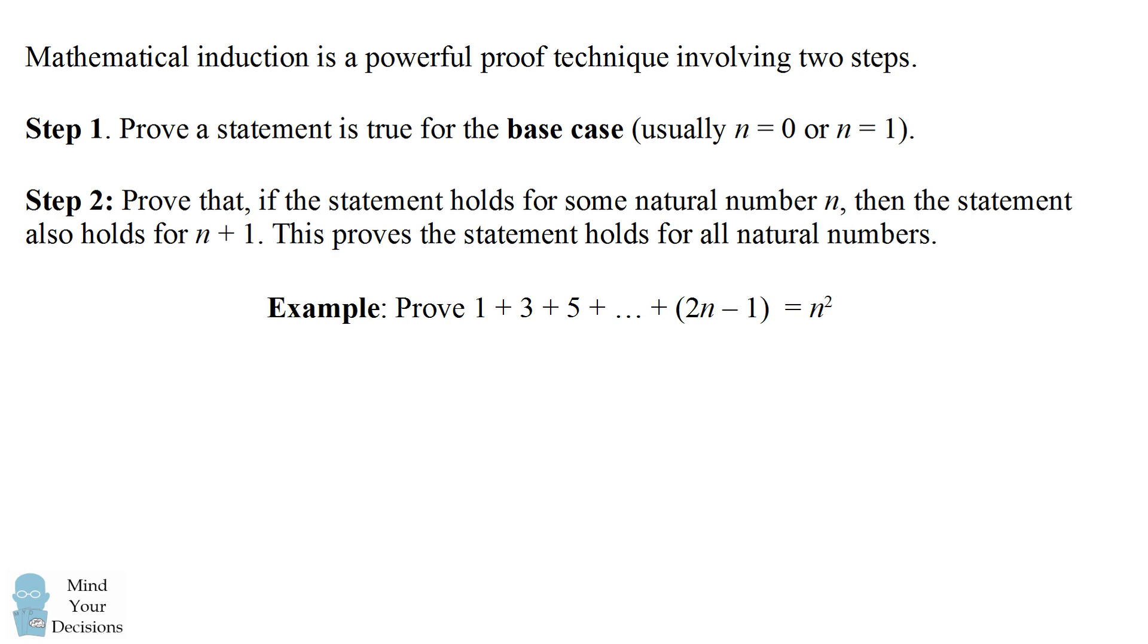Let's do an example to prove that the sum of the first n odd numbers is equal to n squared. We start with the base case of the first odd number. It is true that 1 is equal to 1 squared.